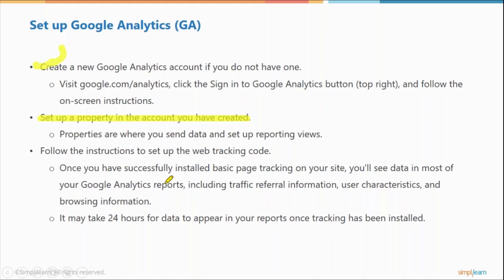Setting up a property and following the instructions to set up the web tracking code — once you've created your Google Analytics account, you want to make sure that you properly copy the code snippet and paste that into the header of your website. If you're using a WordPress site or a Shopify platform or a few other content management systems, there's already a designated place where you can paste this code.